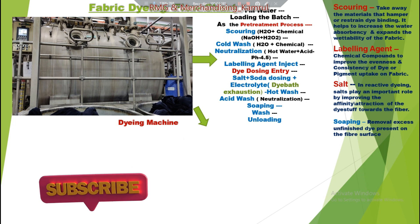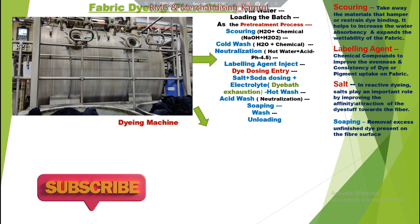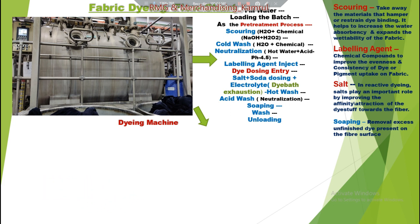Then salt and soda dosing is done — salt plays a vital role in reactive dyeing by improving the affinity or attraction of the dye stuff towards the fiber. After dyeing, a hot wash and neutralization are done again. Then soaping is carried out because after dyeing there is some excess unfinished dye present on the fabric surface that has to be removed. After soaping, another wash is done and then the fabric is unloaded.